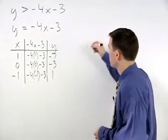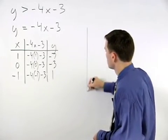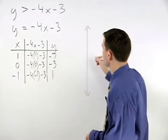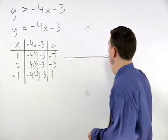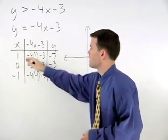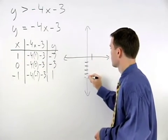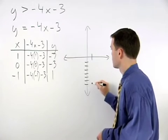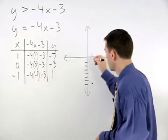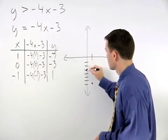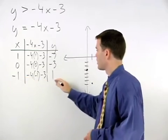So plotting these points on a coordinate system, we have 1, negative 7, 0, negative 3, and negative 1, 1.